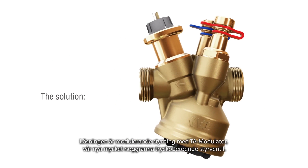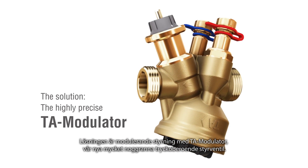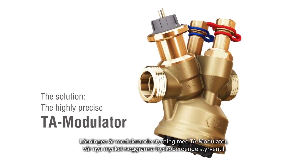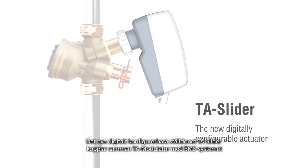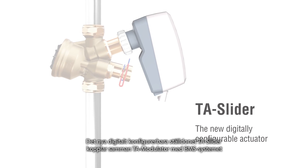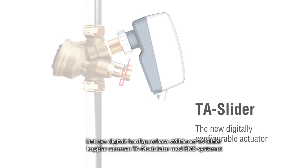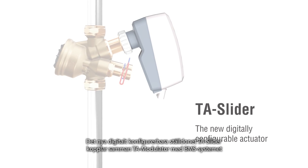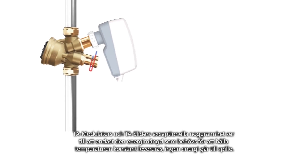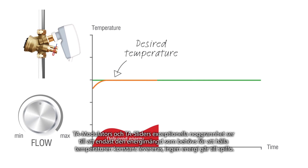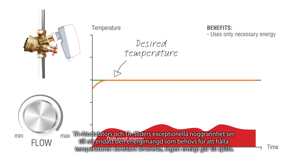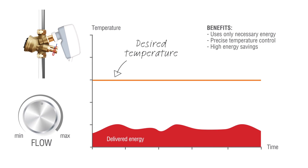The solution is modulating control with the new highly precise pressure independent control valve, TA Modulator. The new digitally configurable actuator TA Slider connects TA Modulator to all building automation systems. Due to the superior accuracy of TA Modulator with TA Slider, only the necessary amount of energy is delivered to keep the temperature constant without any oscillations.